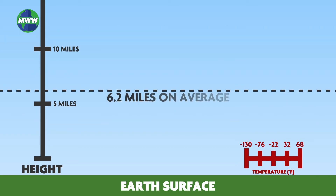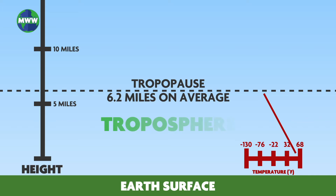Air is the warmest at the earth's surface or the bottom of the troposphere. Moving upward in the atmosphere, gases become less dense and air becomes thinner. Near the ground temperatures average 62 degrees Fahrenheit and around negative 60 degrees Fahrenheit at the tropopause, the boundary between the troposphere and the stratosphere.